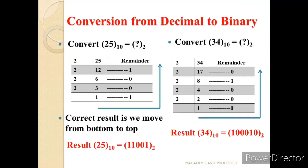Let us see with a simple example. Let us convert 25 base 10 to binary. We divide 25 by 2: quotient 12, remainder 1. Divide 12 by 2: quotient 6, remainder 0. Divide 6 by 2: quotient 3, remainder 0. Divide 3 by 2: quotient 1, remainder 1. Since the quotient is less than the base, we stop. Reading remainders from bottom to top, 25 base 10 equals 11001 base 2.